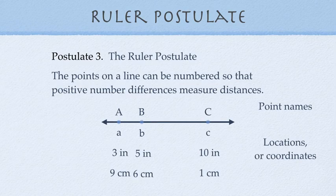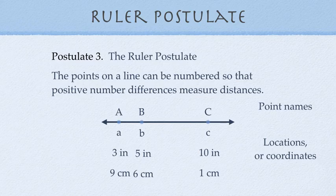Postulate number three is the ruler postulate. Now, let me just reiterate that the postulate numbering and to some degree the theorem numbering is up to the author of any given geometry book. So, in our book, postulate three is the ruler postulate. In Euclid's original book, maybe not. Let's talk about the ruler postulate.